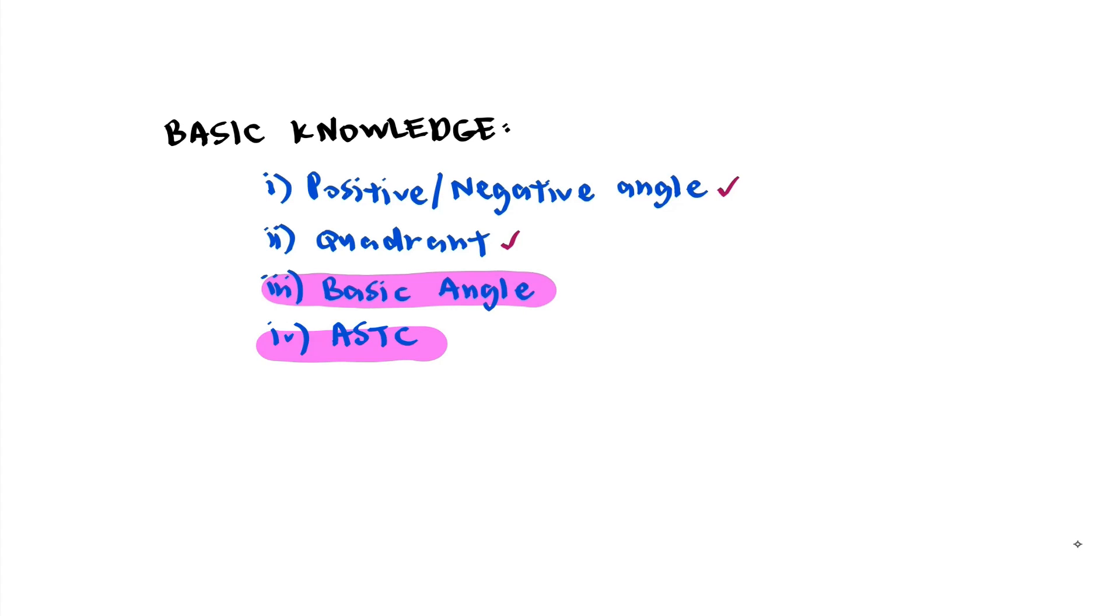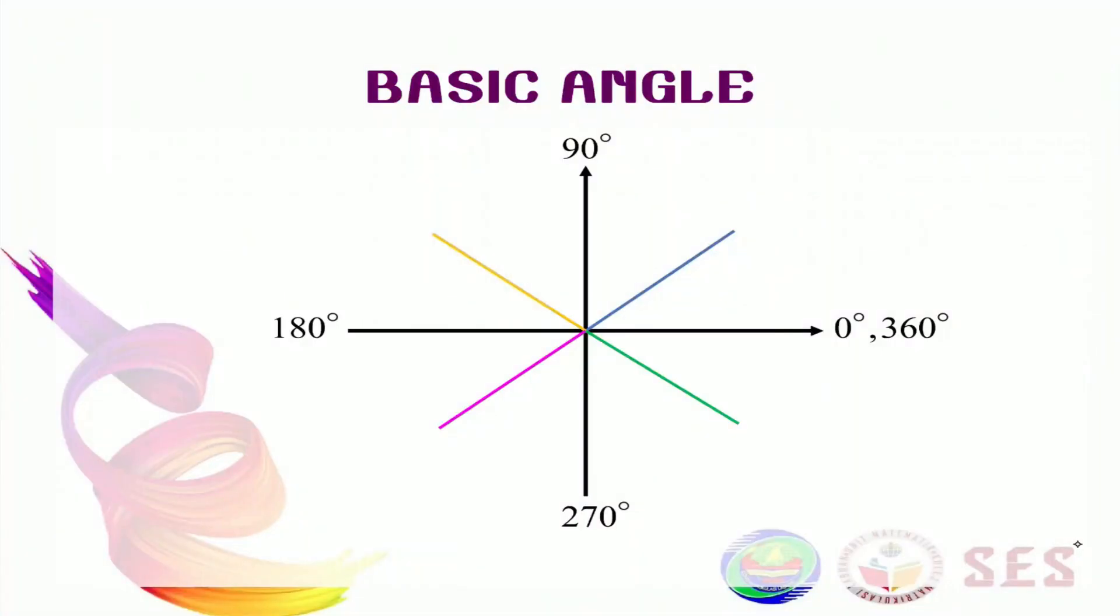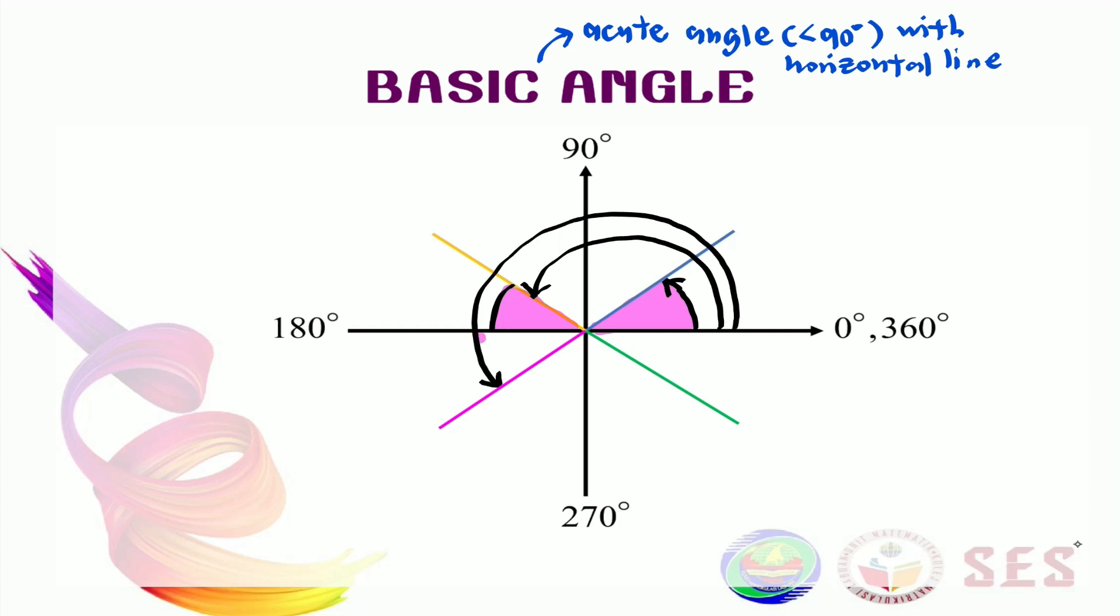Let's see basic angle first. Basic angle is an acute angle, that is angle that is less than 90 degrees with the horizontal line. If you have an angle in the first quadrant, the basic angle will be here. If you have an angle in the second quadrant, your basic angle will be here. The same with third and the fourth quadrant. In the third quadrant, it will be here. And in the fourth quadrant, it will be here.